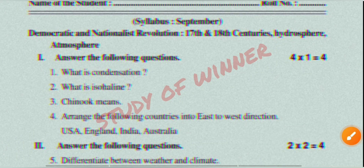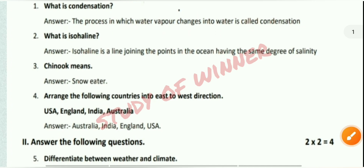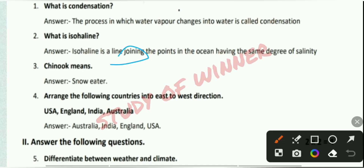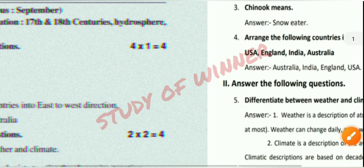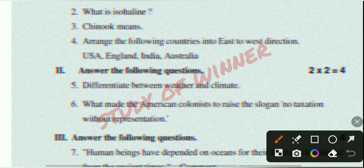Second question: What is an isohaline? The answer is: an isohaline is a line joining points in the ocean having the same degree of salinity.